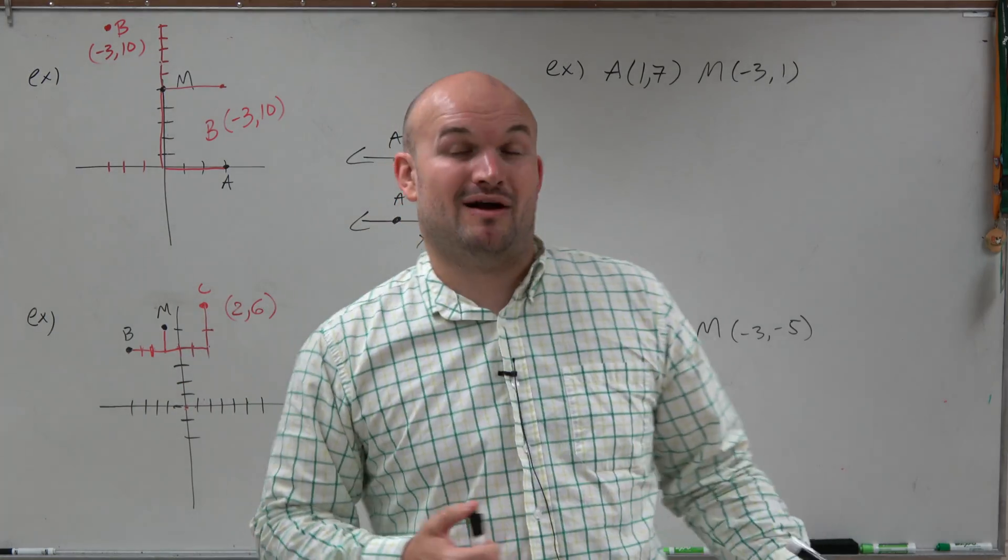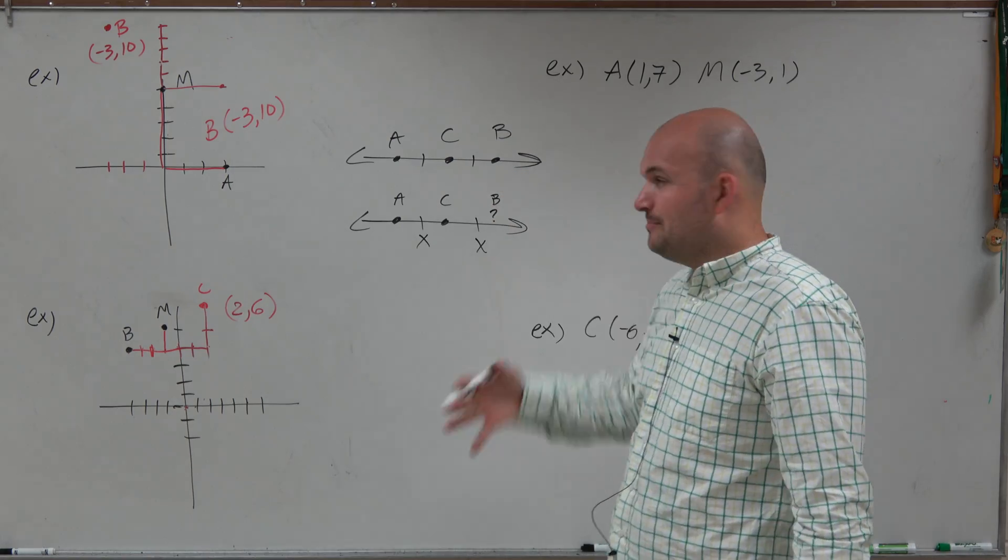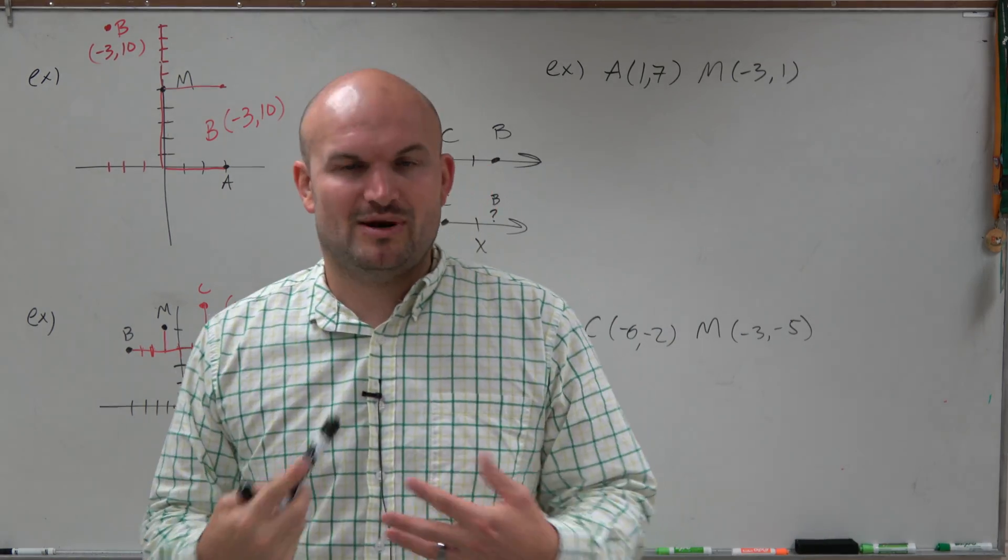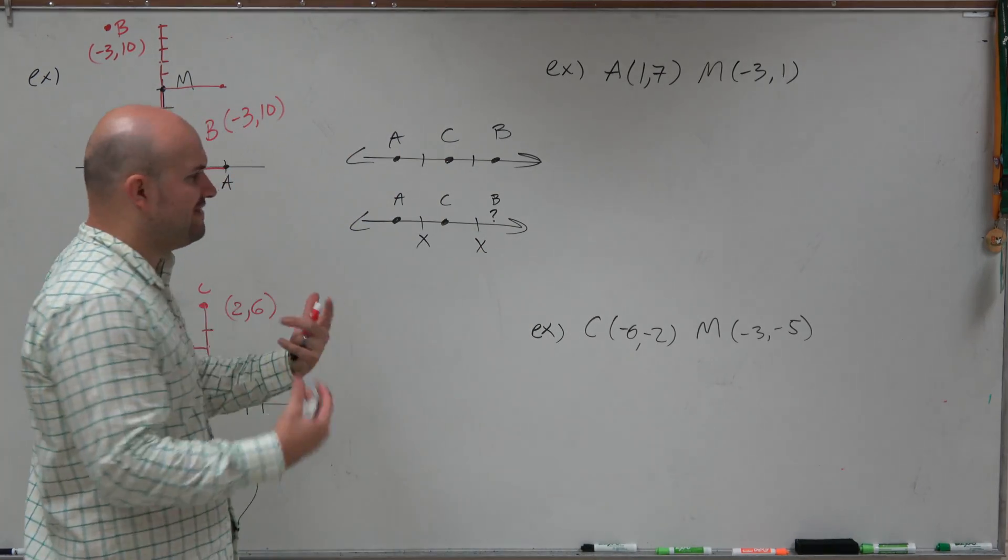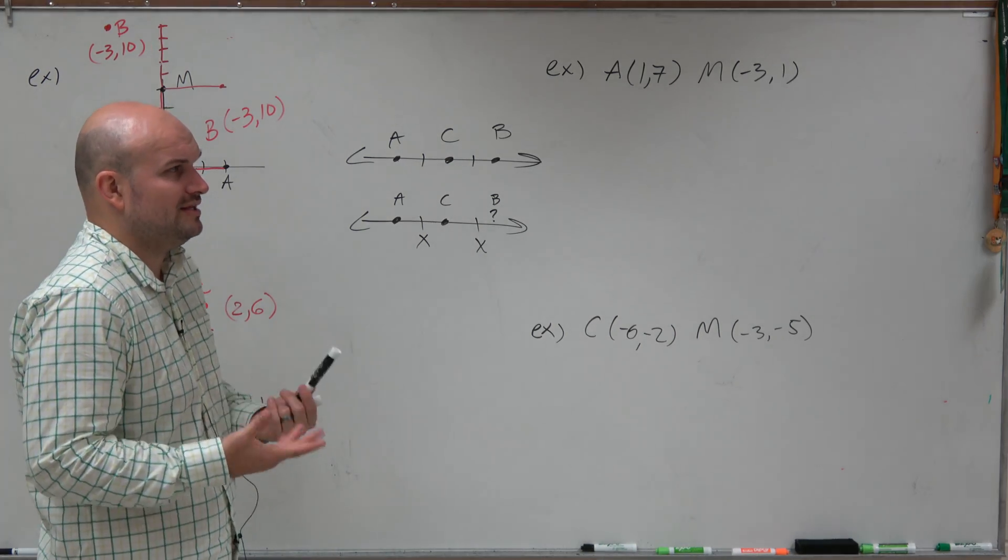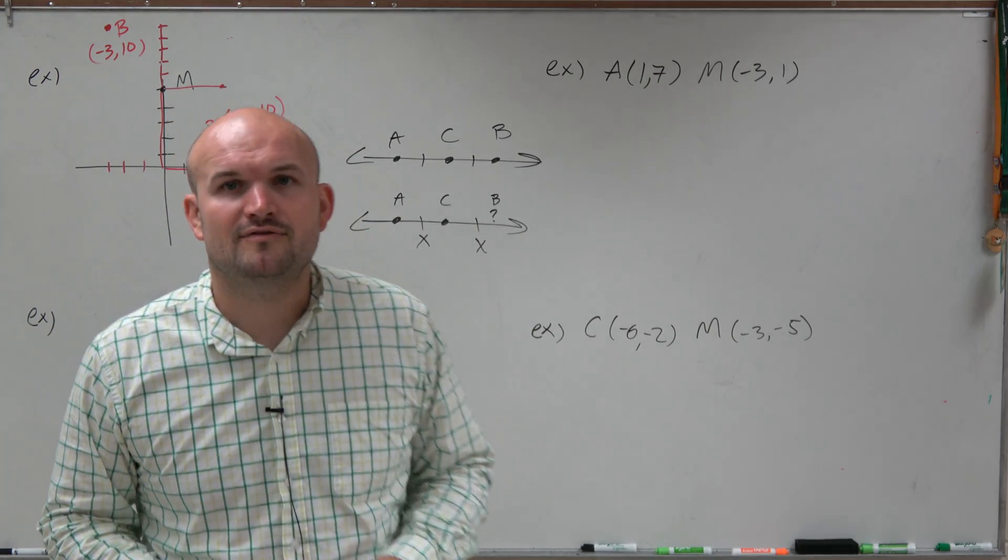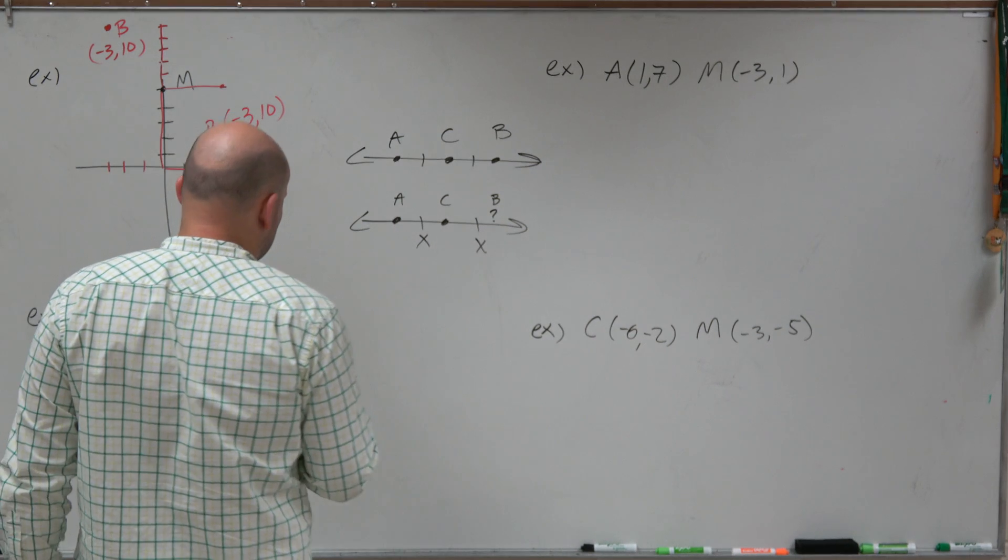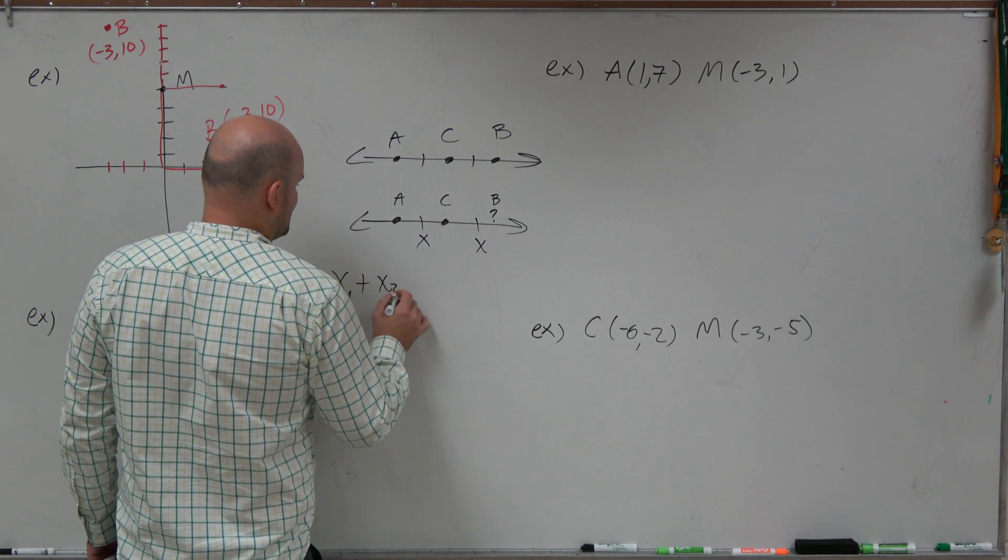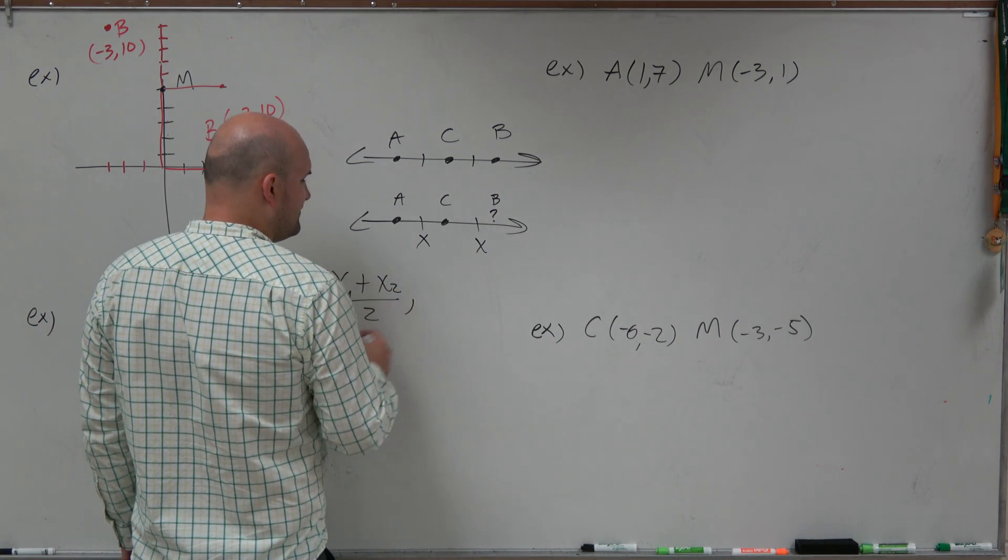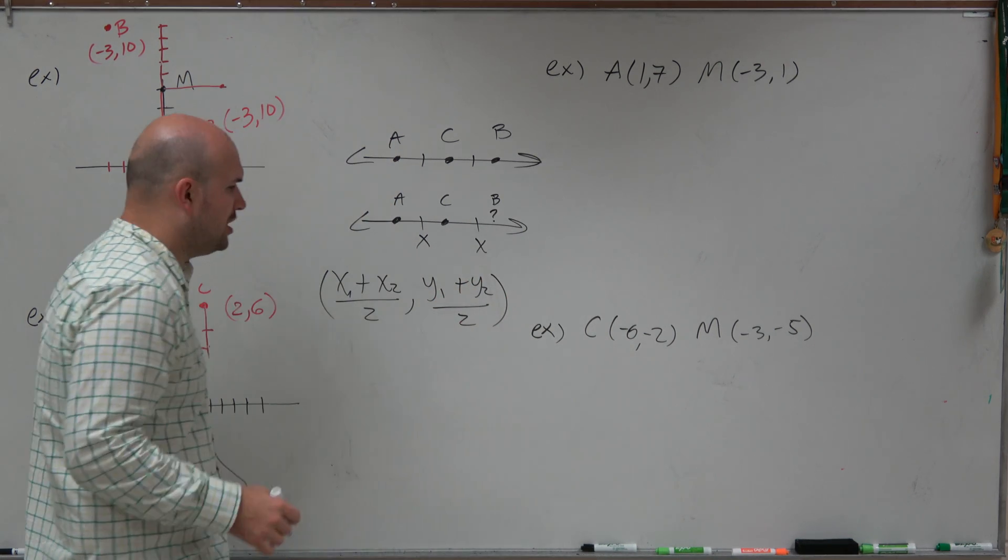But ladies and gentlemen, not always are you going to have a graph. And even if you're not given a graph, you can always graph each one of these, but you can see it took a little bit of time. So maybe there's a way we can speed up the process. If you remember from the midpoint, we could find the midpoint by using a graph, but then we noticed that really all we need to do is find the midpoint horizontally and find the midpoint vertically. To do that, we found x1 plus x2 divided by 2, and then for the vertical midpoint, we did y1 plus y2 divided by 2, which we call the midpoint formula.